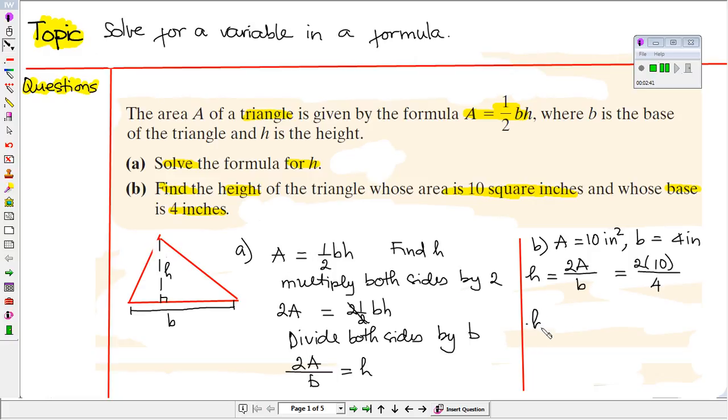Substitute capital A, which is the area, for 10 and lowercase b for 4. So therefore, we want to multiply before we divide. It will be 20 divided by 4. Then we are going to simplify. So this will give us the height of 5 inches.